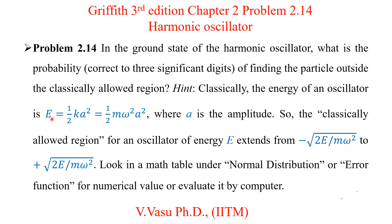Here we can notice one important thing. The total energy equals the potential energy alone at the classical turning point, because the kinetic energy goes to zero there — the only available energy is the potential energy. So the total energy equals just the potential energy: ½mω²a².